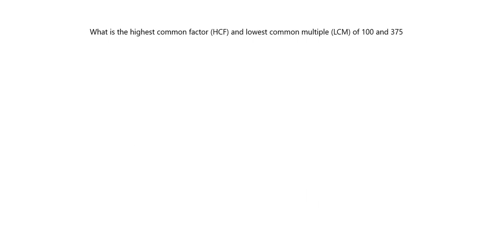To find the highest common factor and lowest common multiple, we already did some of those in the last lesson — for example, we wrote out all the factors and found the biggest one, or wrote out all the multiples and found the first one in common. But with big numbers like 100 and 375, it's actually going to take an enormously long time to write out all the factors, so we're going to use prime factorization to make it easy.